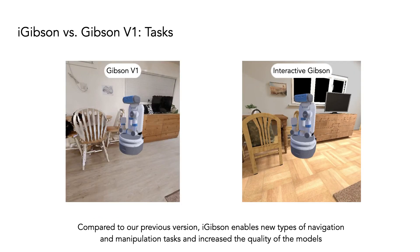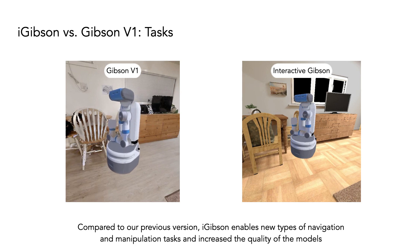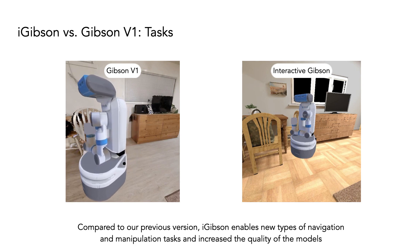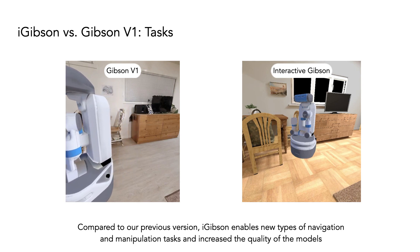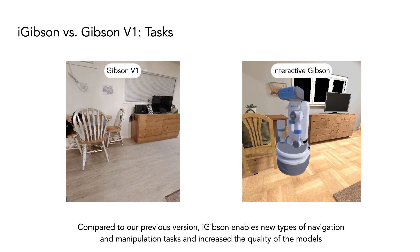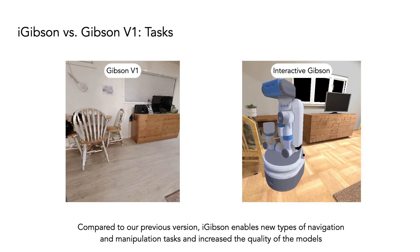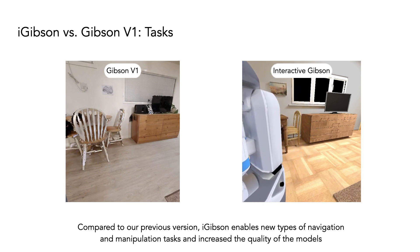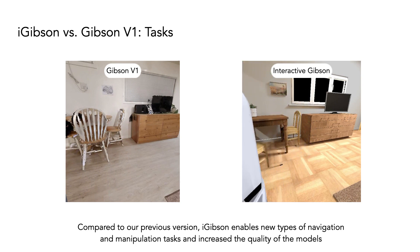Compared to a previous version, iGibson allows learning more natural navigation modes with interaction. Here you see an agent in our previous version, iGibson, colliding with a chair that is not interactive. In the interactive Gibson environment, the chair moves, allowing the agent to learn to interact and to navigate, but also increasing the quality of the models.